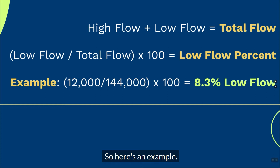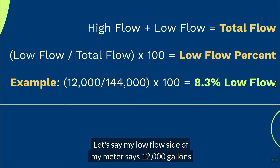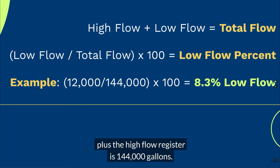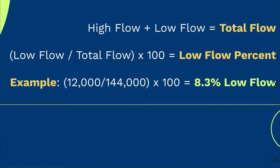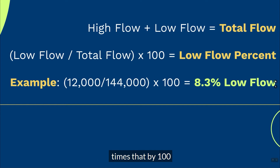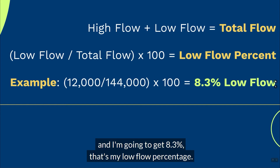Here's an example. Let's say my low flow side of my meter says 12,000 gallons, and the total of the low flow register plus the high flow register is 144,000 gallons. I'm going to divide the 12,000 by the 144,000, times that by 100, and I'm going to get 8.3%. That's my low flow percentage.